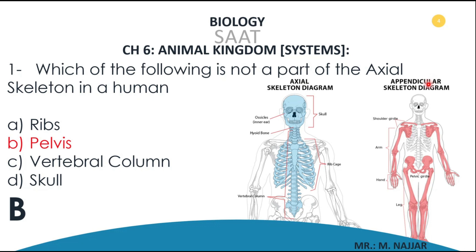The axial skeleton is made up of the skull, the neck or vertebral column, rib cage, and the breast bone. Again: skull, rib cage, vertebral column, and the sternum or breast bone — this is the axial skeleton. If you are looking for the appendicular skeleton, this is the rest of the skeletal system.